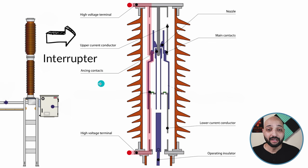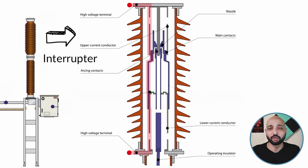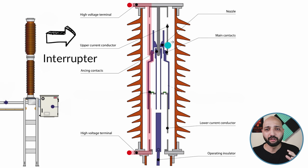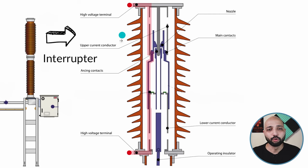The main contacts, shown here in blue, are responsible for carrying the rated normal current and have comparatively low resistance. The arcing contacts, shown in gray, carry the fault current, which is very high. The material of both contacts is different because their purposes differ. Nozzles are also provided which focus the SF6 gas on the arc — whenever current is interrupted there will be an arc, and the nozzle focuses the gas on it so that arc quenching happens smoothly.